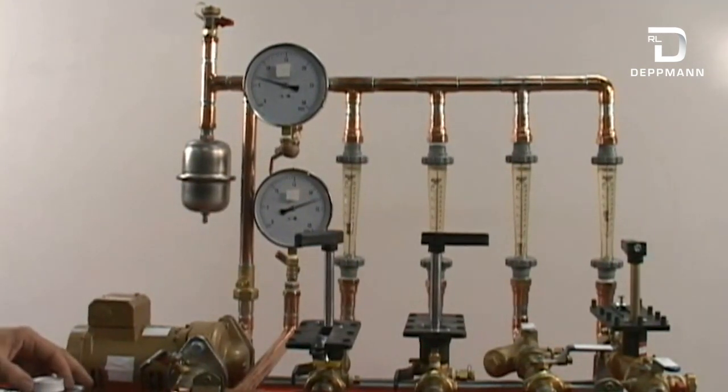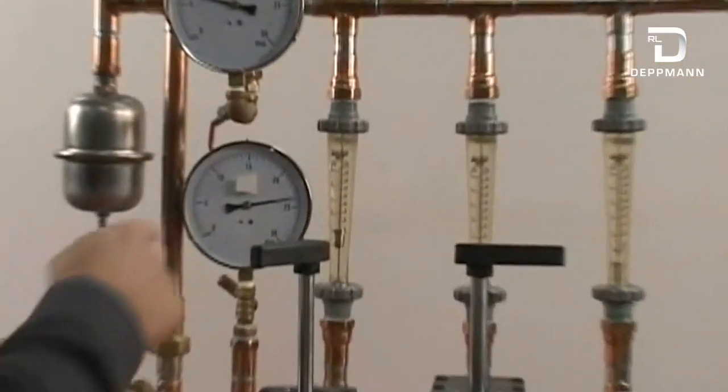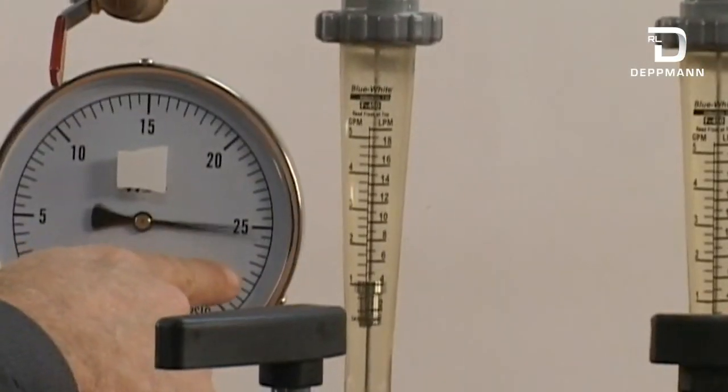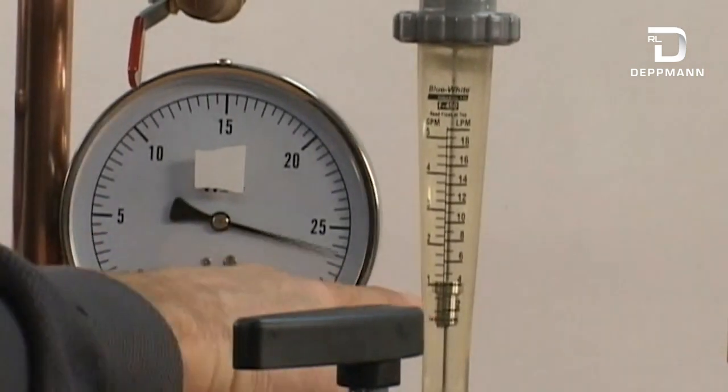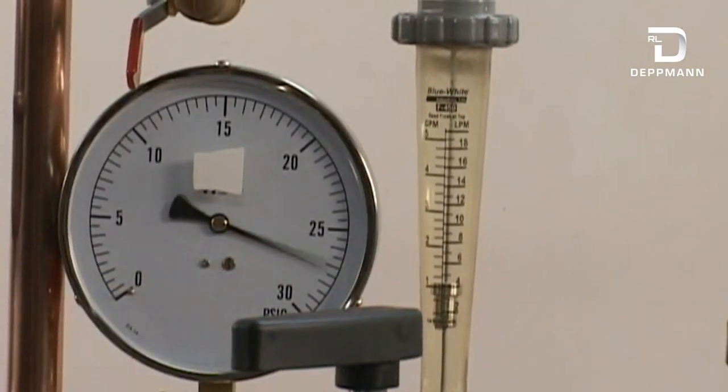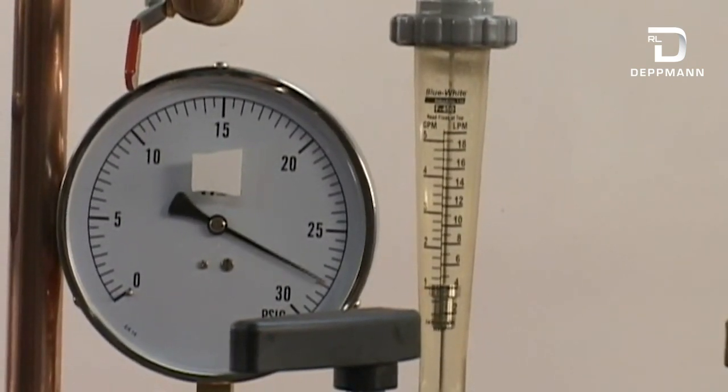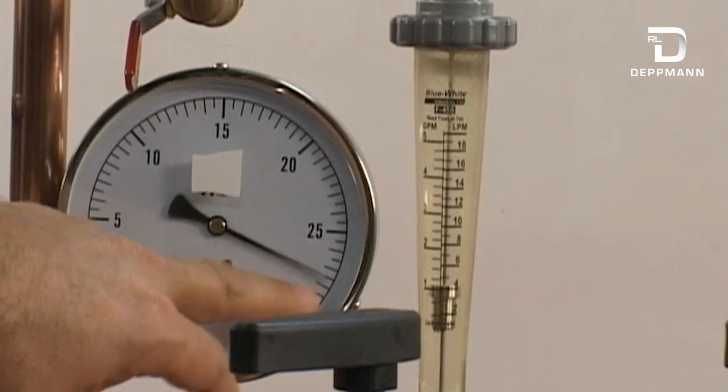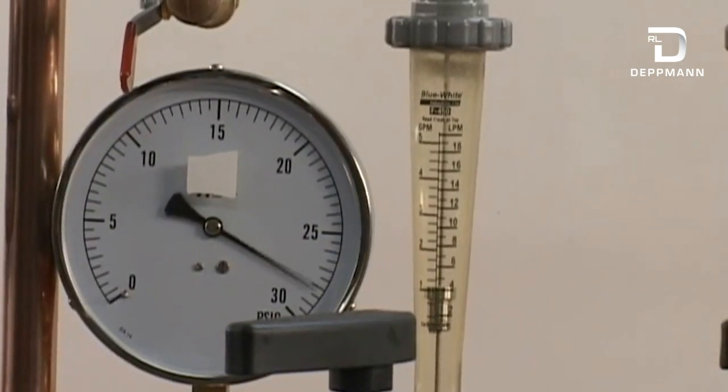So as I ramp this up, I want you to zoom in on that and watch. I'm going to ramp this up. As you see, my discharge pressure is going up, but my flow is staying at 1 GPM. It's going up. See that? So now I'm up around 28 pounds, that stayed at 1 gallon per minute.